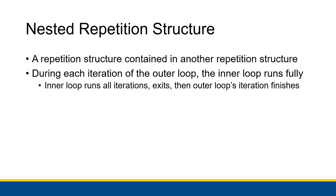In total, there are 3,600 iterations of the second hand — 60 iterations of the second hand times every one of the 60 iterations of the minute hand, so 3,600 seconds in an hour. A nested repetition structure is a repetition structure contained in another repetition structure. During each iteration of the outer loop, the inner loop runs fully and completely — every single iteration of the inner loop completes before the iteration of the outer loop can finish.